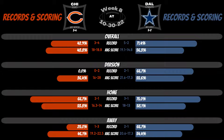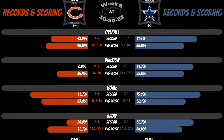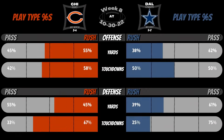Here, butterfly charts show percentages for records and scoring amongst various game types. Play type percentages purpose is to show how each offense's play calls go between pass and rush, and the ratio of the two, for yards and touchdowns. The same is shown for defense to see what the opponent allows more of.